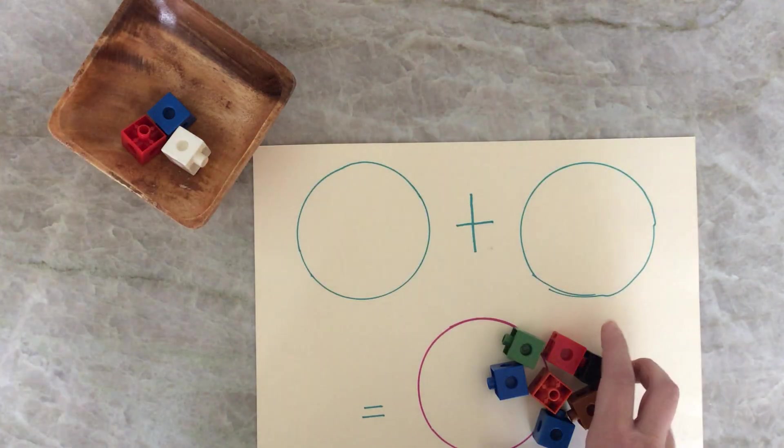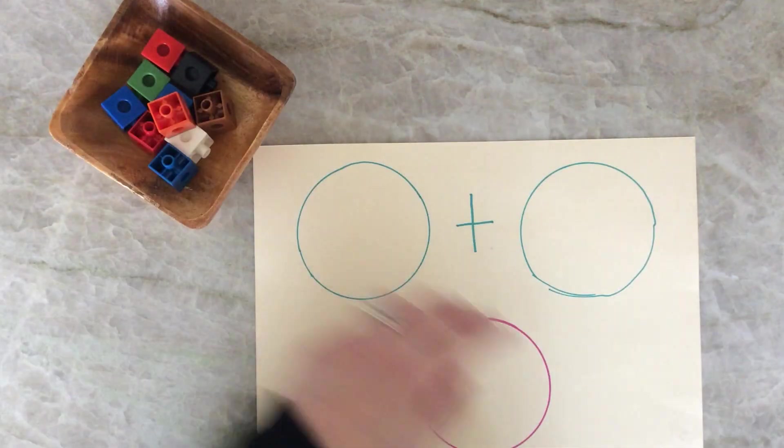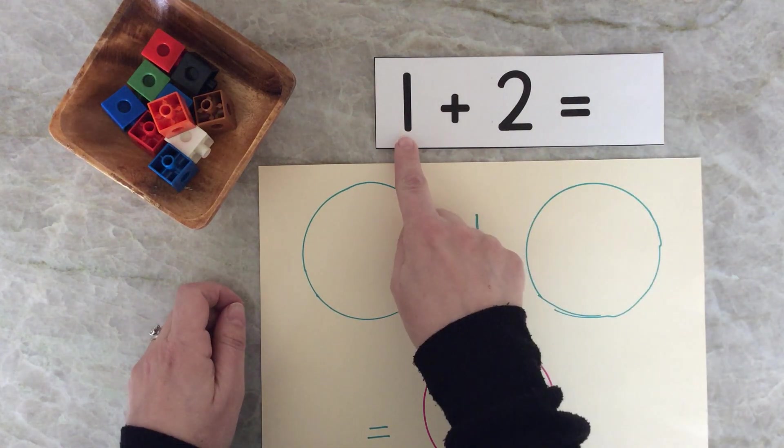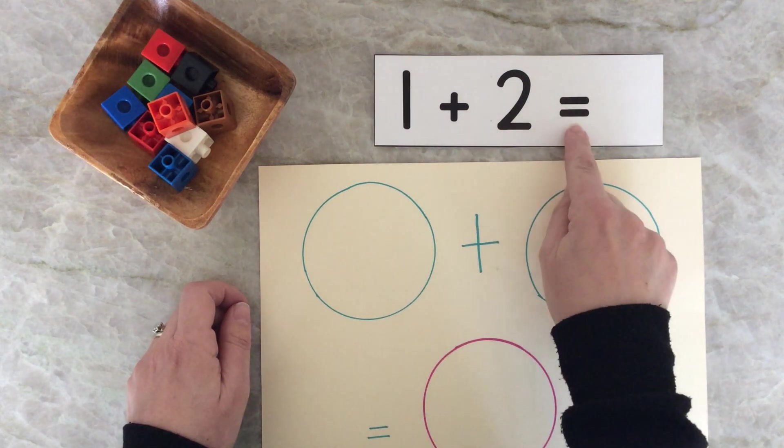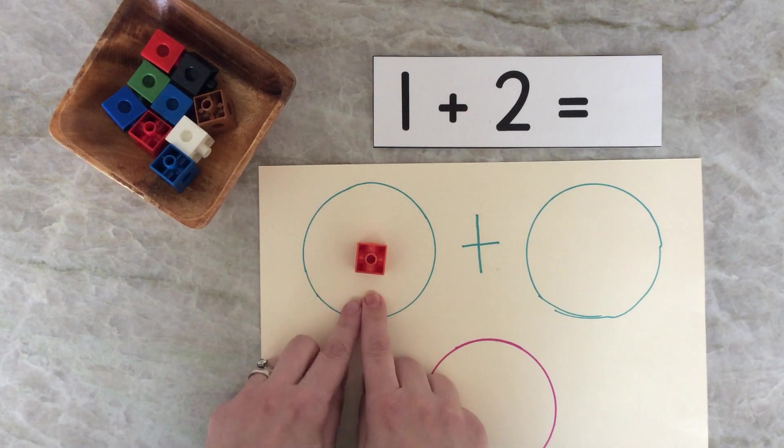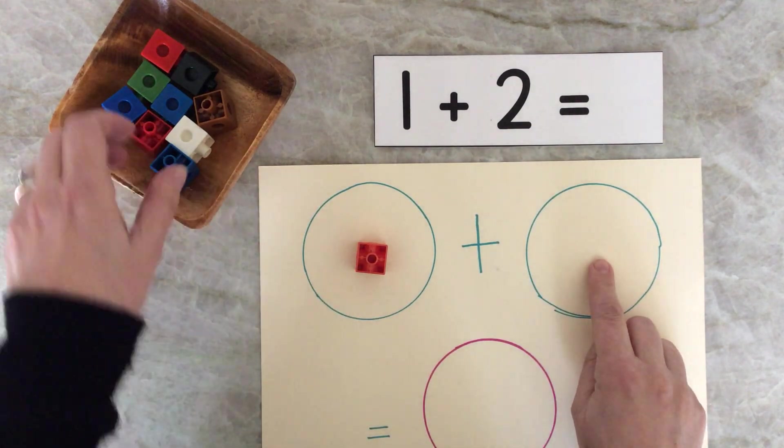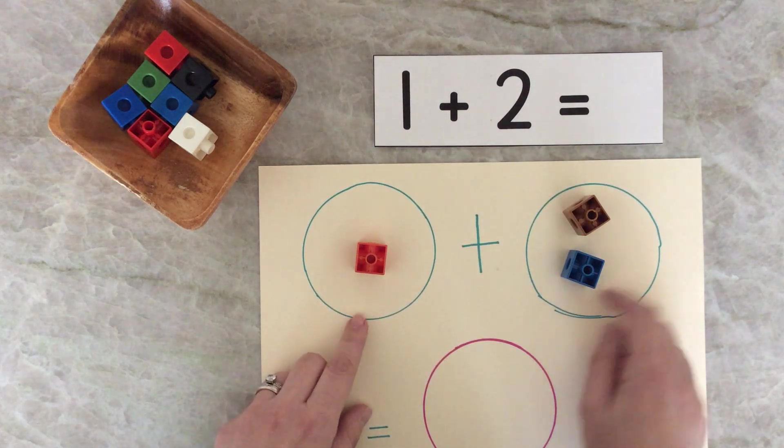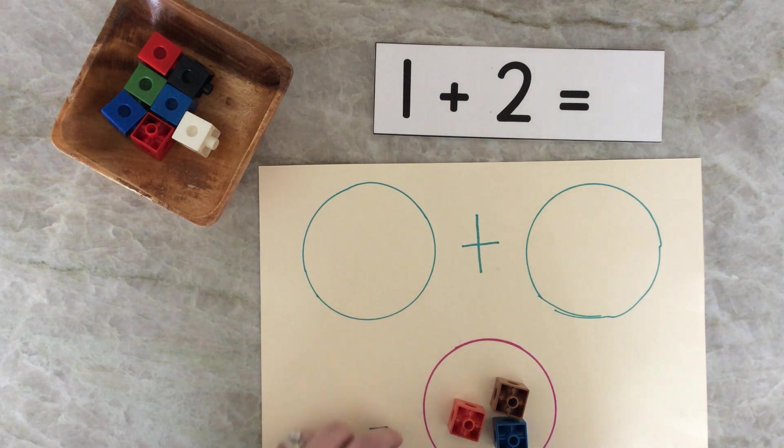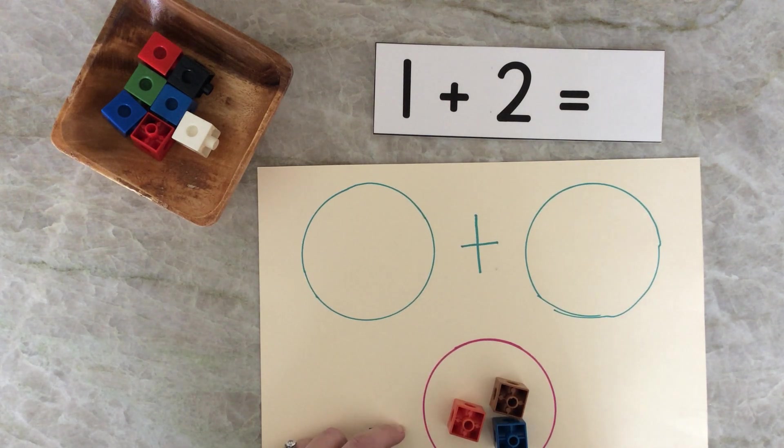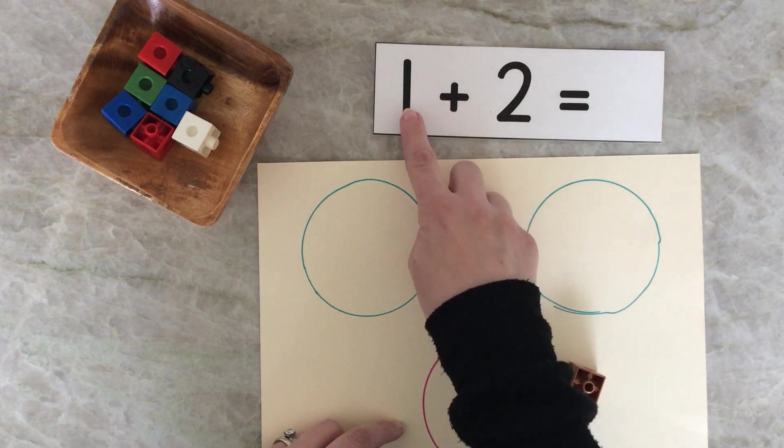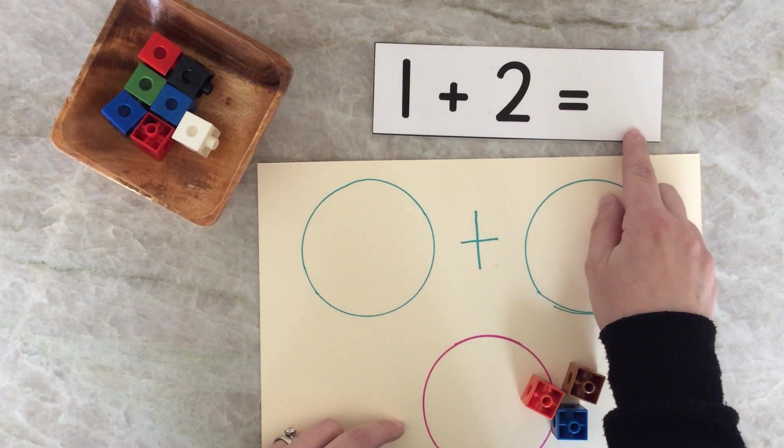Let's try another one. Clear my mat. Can you help me read the addition sentence? One plus two equals. Let's try. I'm going to put one in this circle and I'm going to put two in this circle. I'm going to say the magic word equals and I'm going to move them all down below. Let's count and see what the answer is. One, two, three. One plus two equals three.